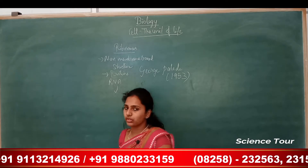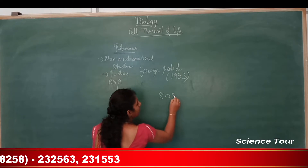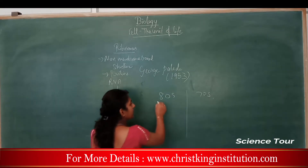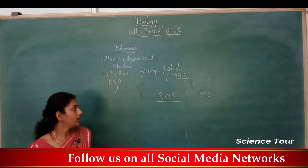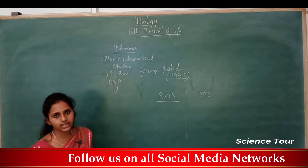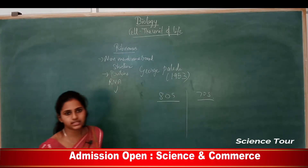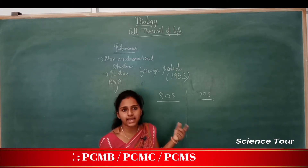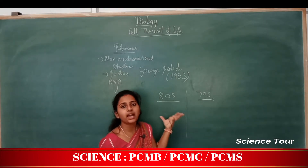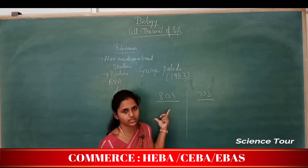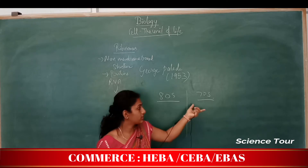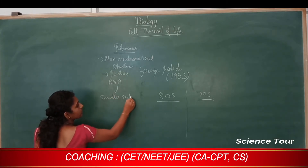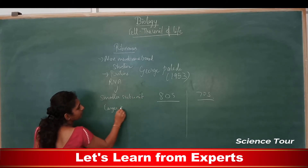There are mainly two types of ribosomes: 70S type and 80S type. Eukaryotic cells contain 80S type of ribosomes in their cytoplasm. However, some organelles like mitochondria and chloroplast contain 70S type of ribosomes.